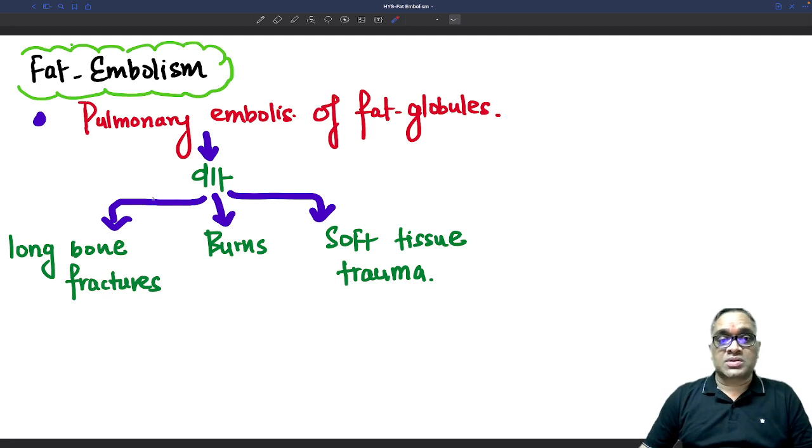How does pulmonary embolization occur? It can be because of three reasons: either there is a long bone fracture, or maybe due to burns, or maybe because of soft tissue trauma.